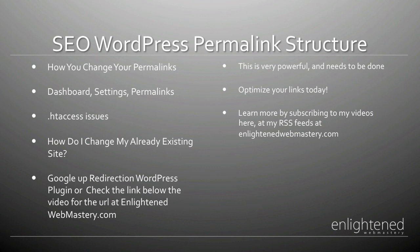What if you already have a permalink structure in place — maybe p=7 or a date structure that isn't right for you? If you're already indexed in Google, you have backlinks, and people are linking to your blog, you'll need to redirect them. The best way is to use a plugin called Redirection — you can find the link on my website or Google 'WordPress Redirection plugin.' It automatically creates 301 redirects, so when somebody clicks your old p=754321 link, they'll be sent to your new post URL. Once Google re-indexes your site, they'll pick up the new URLs.